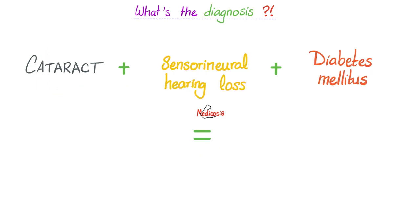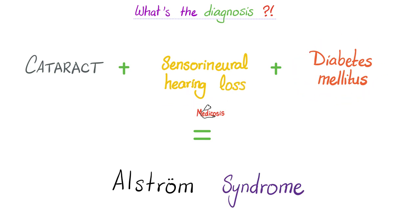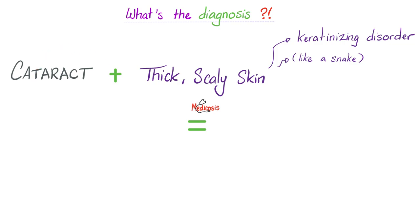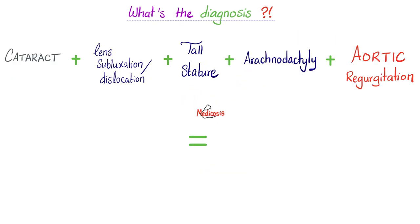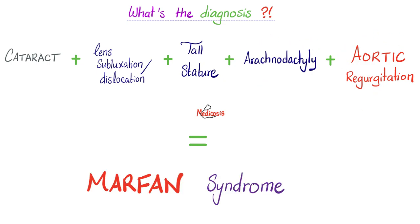Next: a kid with cataract plus sensorineural deafness plus diabetes. Diagnosis? Alstrom syndrome. Next: cataract plus thick scaly skin — some describe it as scaly like a snake, a hyperkeratinizing disorder. Diagnosis? Ichthyosis — the word 'ichthys' means fish. And: congenital cataract plus lens subluxation or dislocation plus a very tall individual plus arachnodactyly plus aortic regurgitation. Diagnosis? Marfan syndrome.